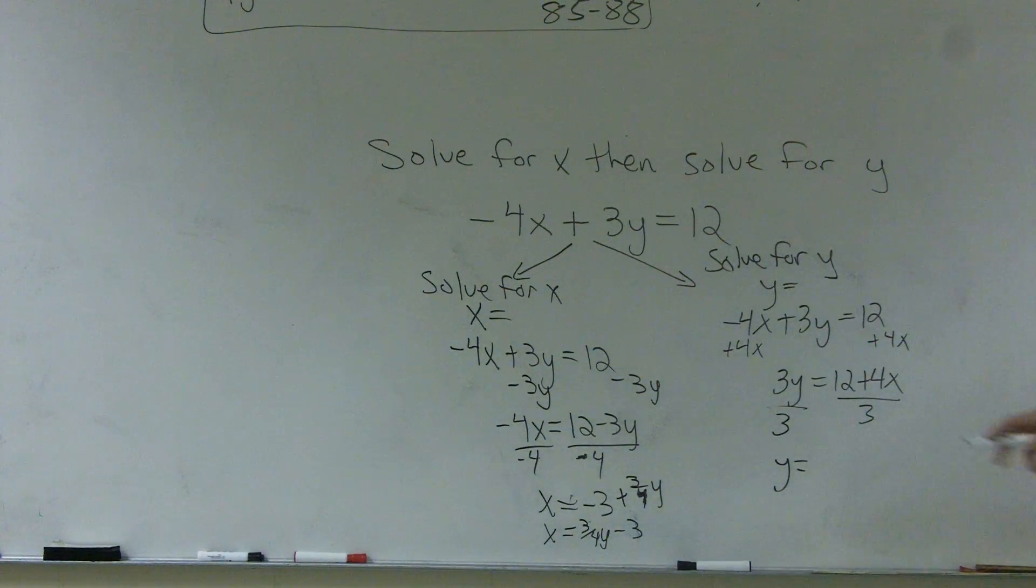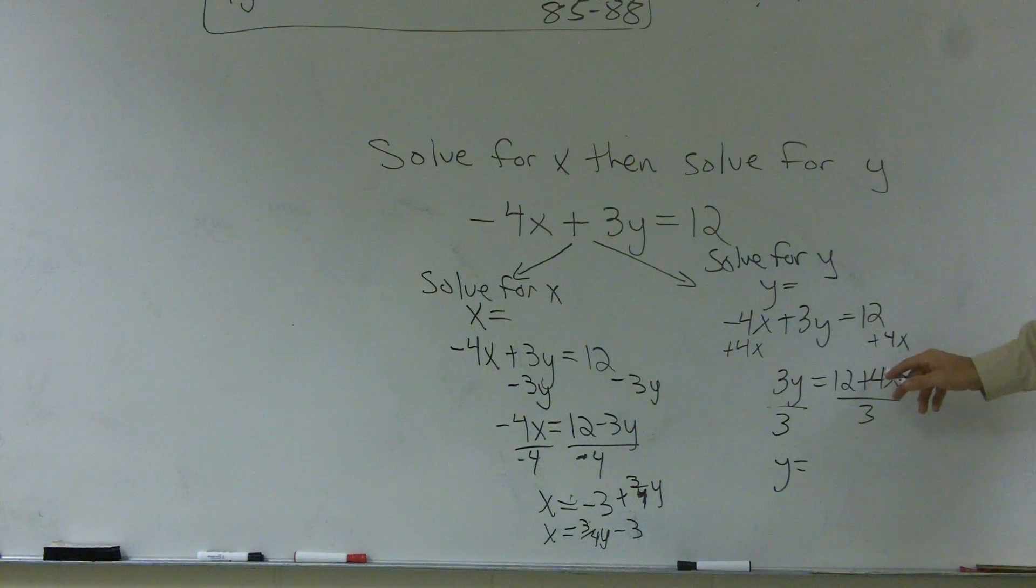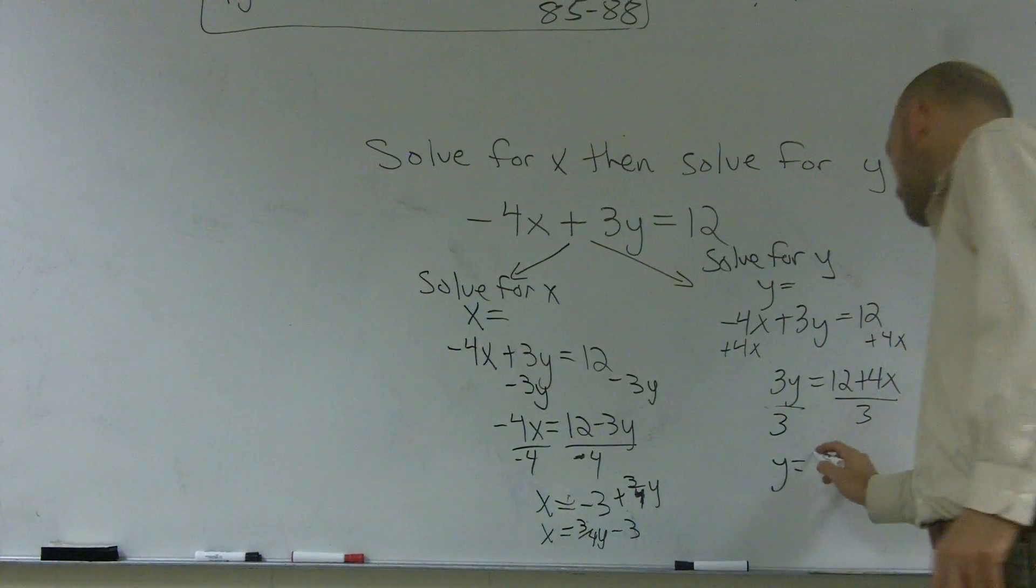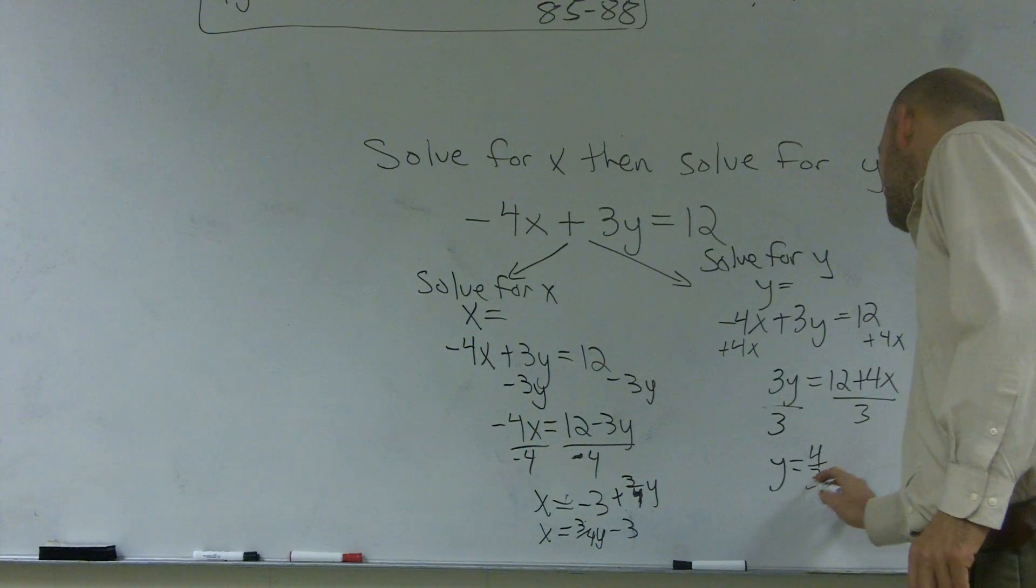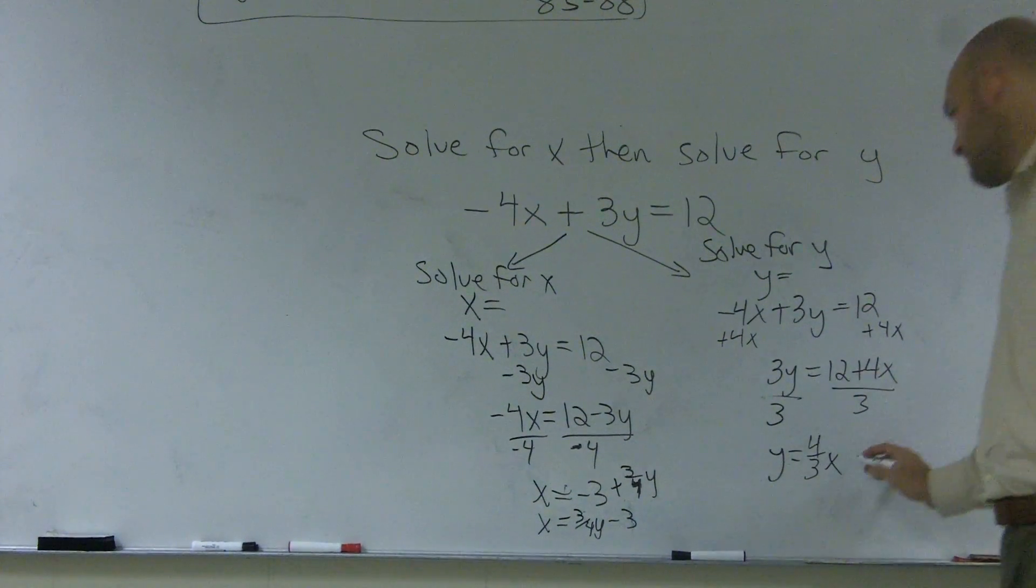And here I'll actually do a little, again, now here, 4 divided by 3, we can just leave as 4-thirds x. And 12 divided by 3, we can just leave as 4.